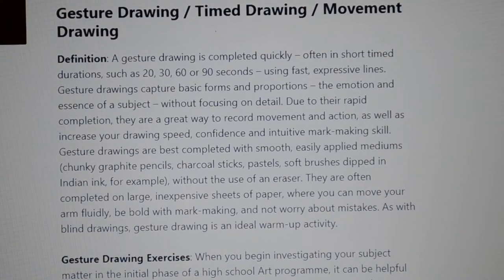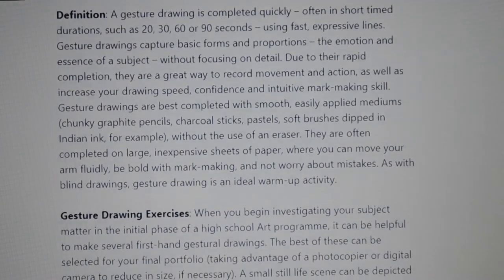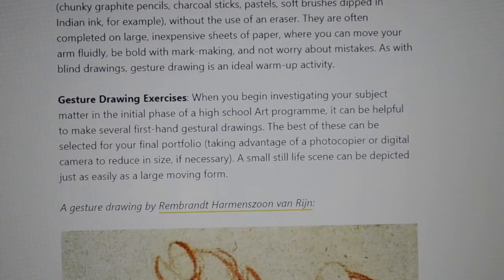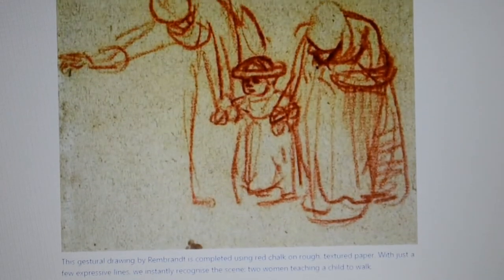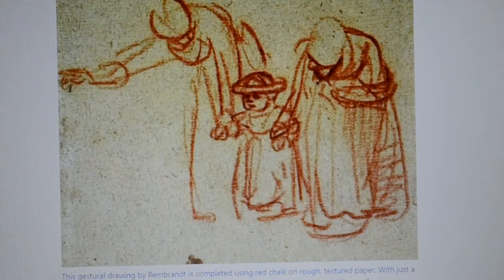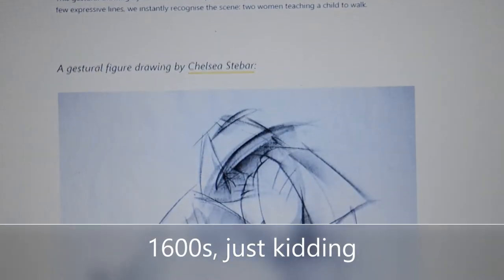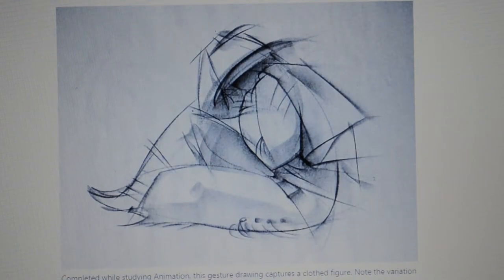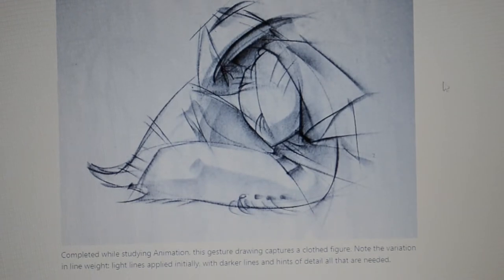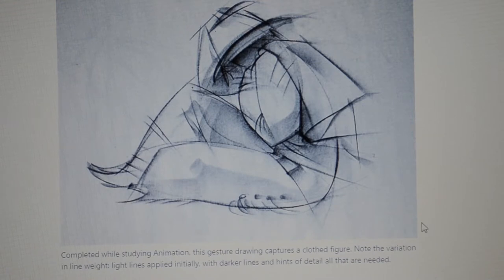Another type of line drawing is a gesture drawing. This is usually a speed exercise, so drawing very quickly. Here's an example by Rembrandt, a famous Dutch artist from the 1500s. Here's another example of a gestural figure drawing. Notice how certain lines appear darker than others, and different thicknesses of lines were used to create some detail, shading, and depth.